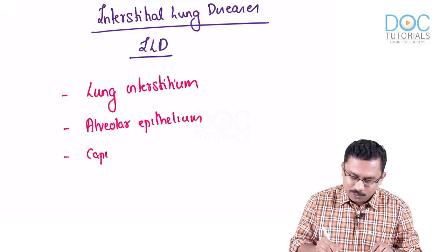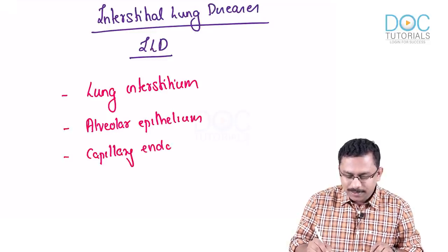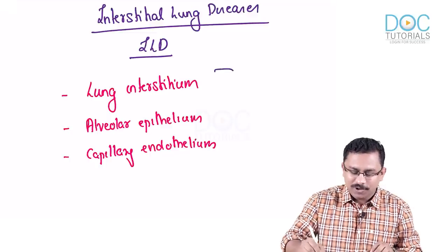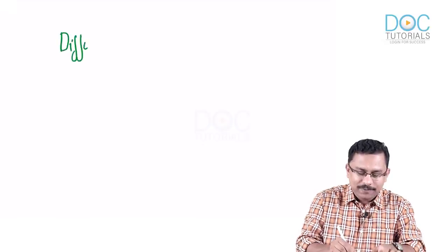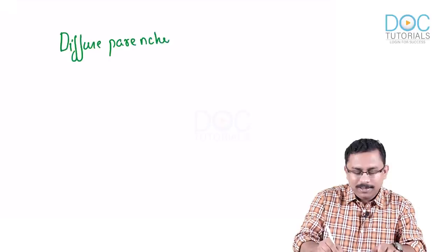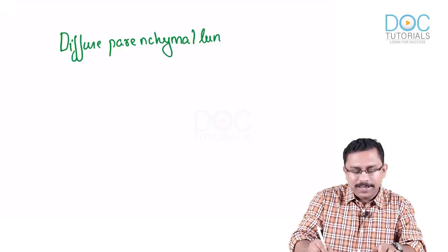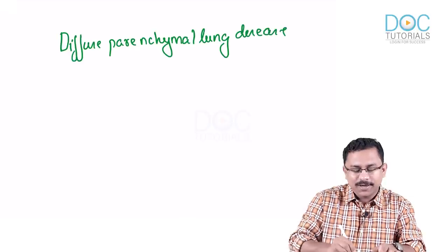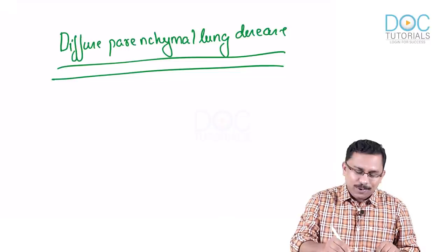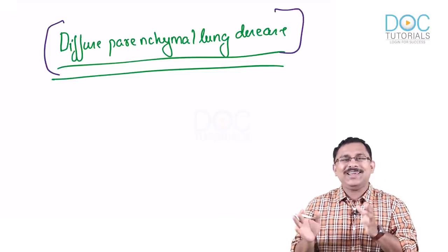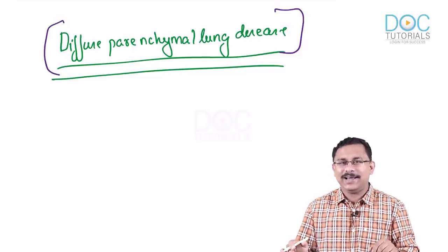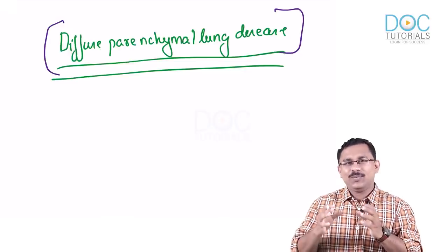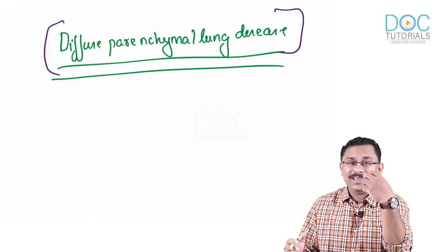Because ILD involves the interstitium, alveolar epithelium, and capillary endothelium, a more preferred term is diffuse parenchymal lung disease. That is the preferred terminology, though in clinical parlance we commonly use ILD. We have understood it affects the interstitium, alveolar epithelium, and capillary endothelium — but what exactly is the pathology?